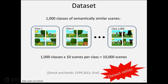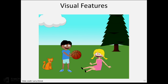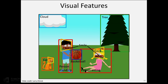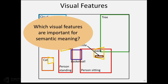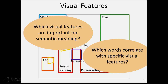We collected a dataset with 1,000 different sentences and had 10 people on Mechanical Turk create a scene for each one. One thing to remember is that this scene is trivially fully annotated — it's a synthetic image we created, so we know exactly where everything is, all the expressions, all the poses, and all the objects. You can then ask fun questions like which visual features are important for the semantic meaning, or which words correlate to specific visual features, and learn a mapping between visual features and language. You also have full control over the density of the distribution you're learning from.